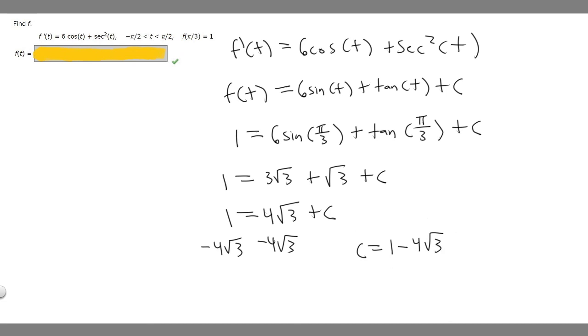So now that we've got c, all we've got to do is plug it back in to our equation, and then that'll be our answer. So f of t is going to be equal to 6 times the sine of t plus the tangent of t plus c, where c is equal to 1 minus 4 radical 3.